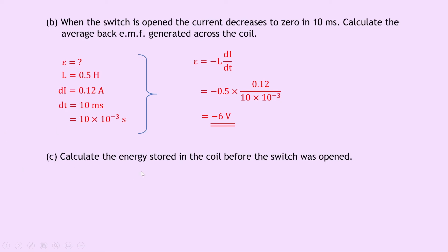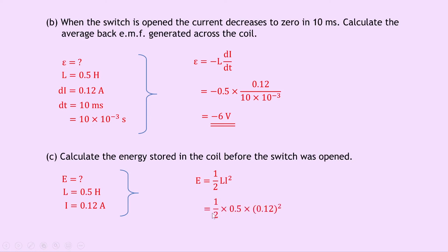Part C says to calculate the energy stored in the coil before the switch was opened. We'll have maximum energy stored when maximum current is flowing. Inductance L is 0.5 Henrys and maximum current I is 0.12 amps. Using E equals a half LI squared, substituting in gives half times 0.5 times 0.12 squared, which gives a final answer of 3.6 times 10 to the minus 3 joules.